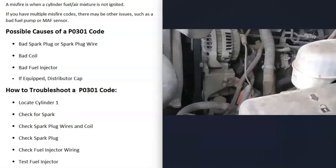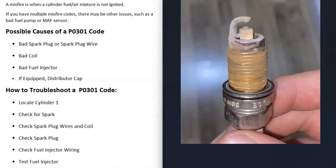Once you find cylinder number one, the main things to check are whether you're getting spark to that cylinder and whether you're getting fuel to it. One method is to pull out the spark plug and check what it looks like.